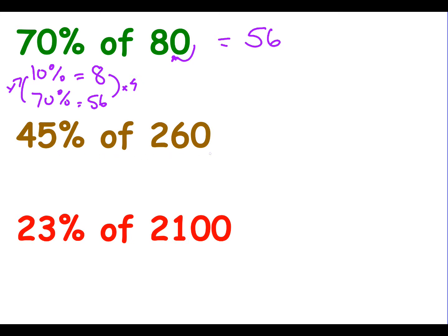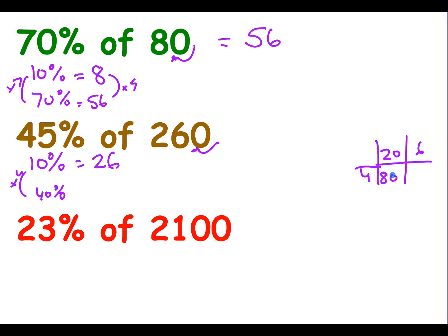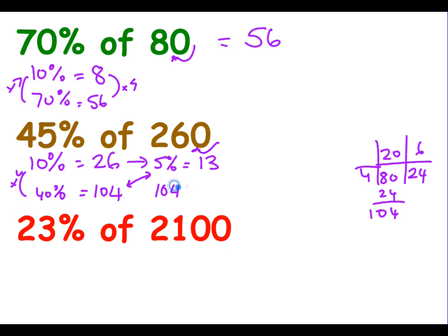Now 45% of 260. 10% is 26. So 40% is 26 times 4, which is 104. And 5% is half of 26, which is 13. To get 45% I combine 40% and 5%: 104 plus 13 gives us 117. So 45% of 260 is 117.